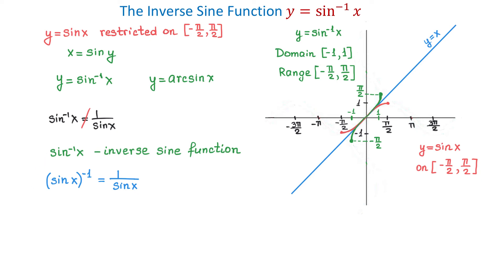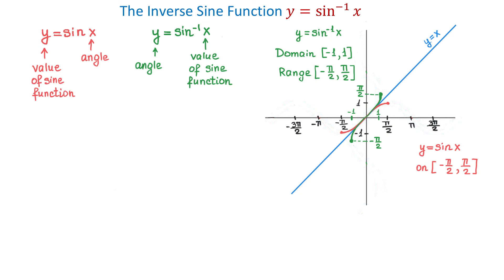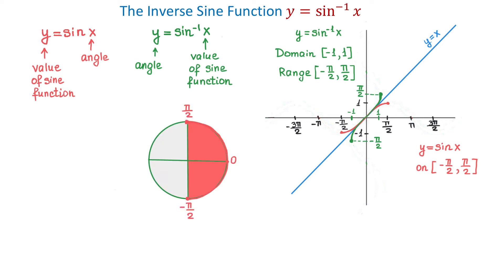Now let's talk about the meaning of the inverse sine function. In a sine function y equals sine of x, x represents an angle and y represents the value of the sine function. In the inverse sine function, y represents the angle and x represents the value of the sine function. So when we find inverse sine of x, we find an angle in the interval from negative pi over 2 to positive pi over 2.